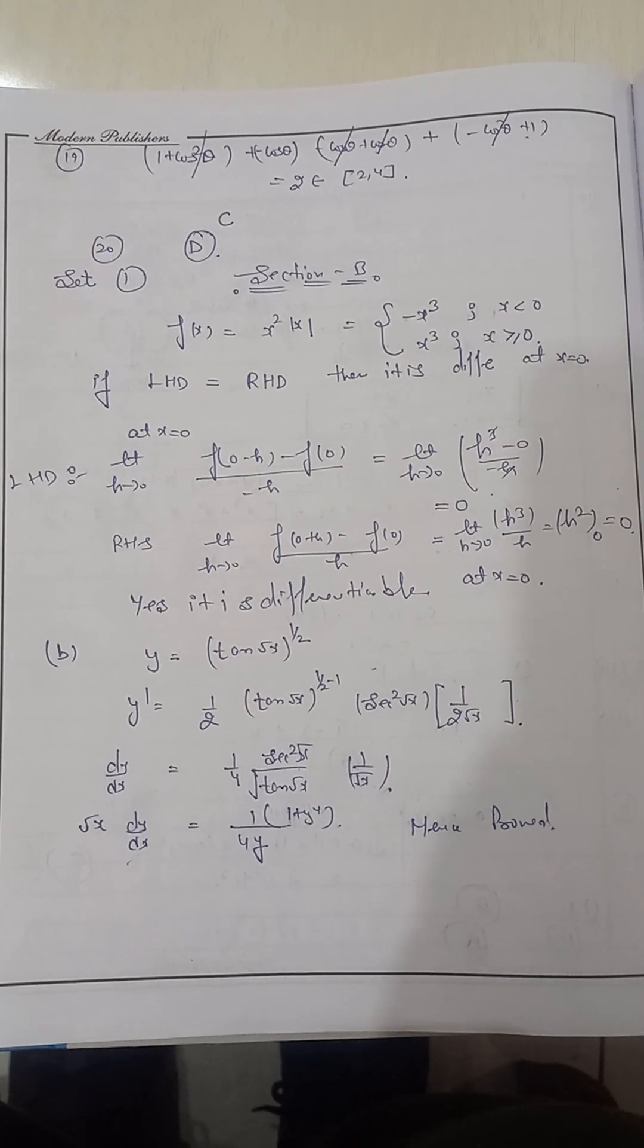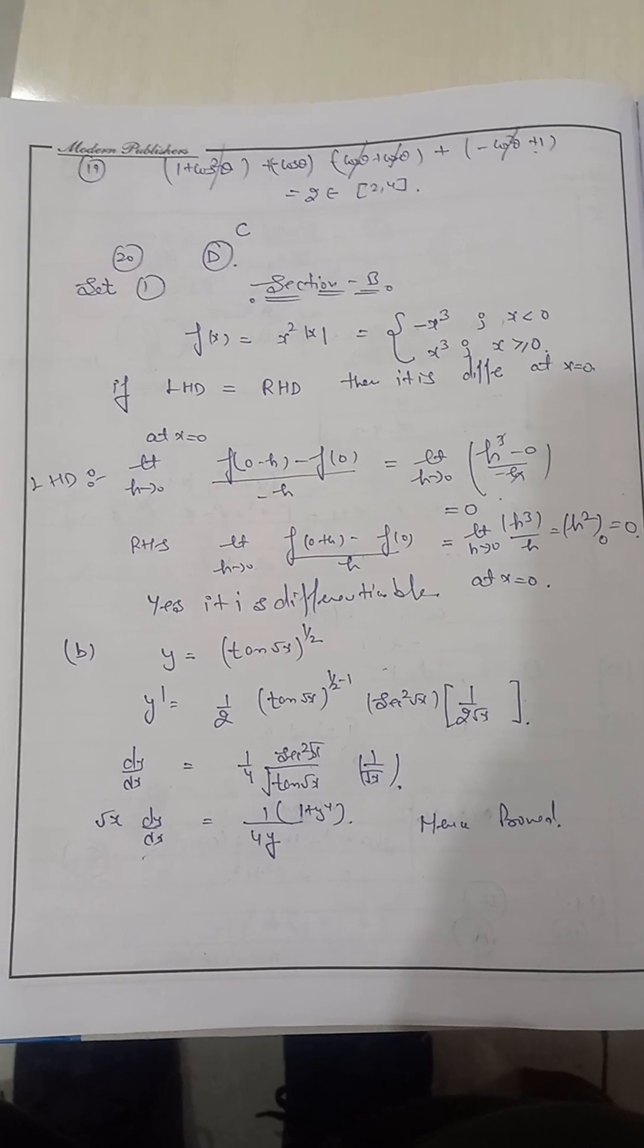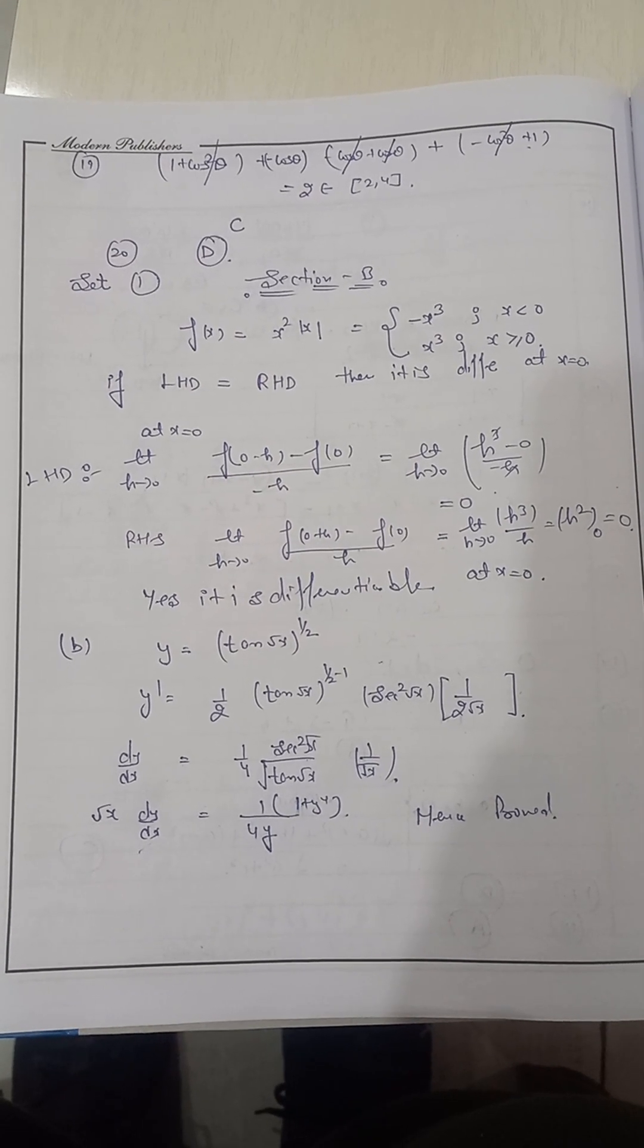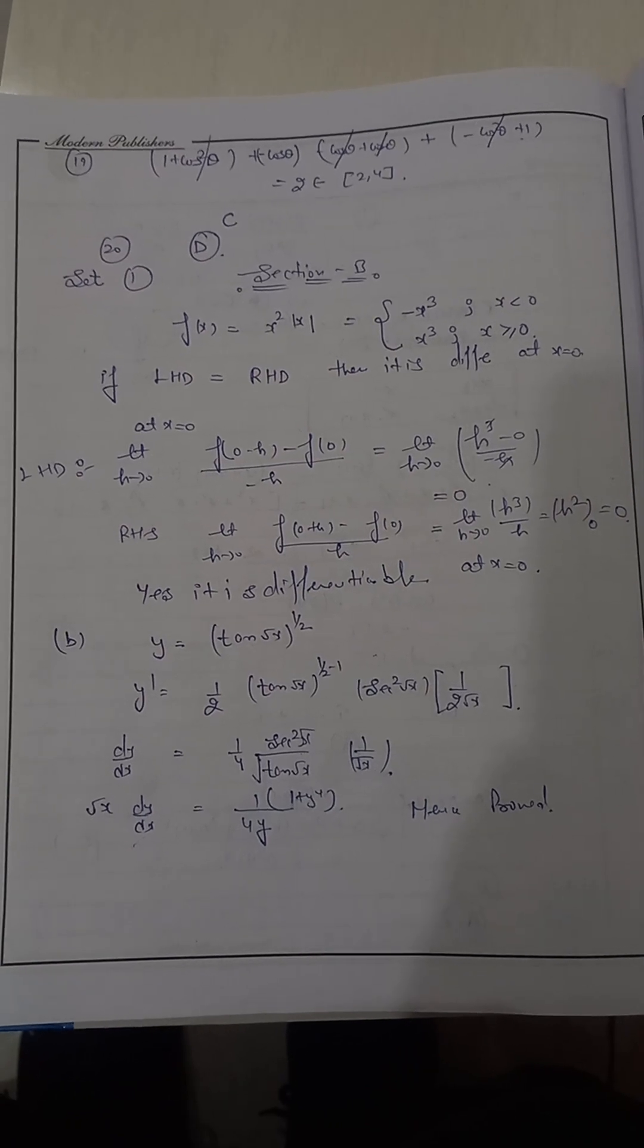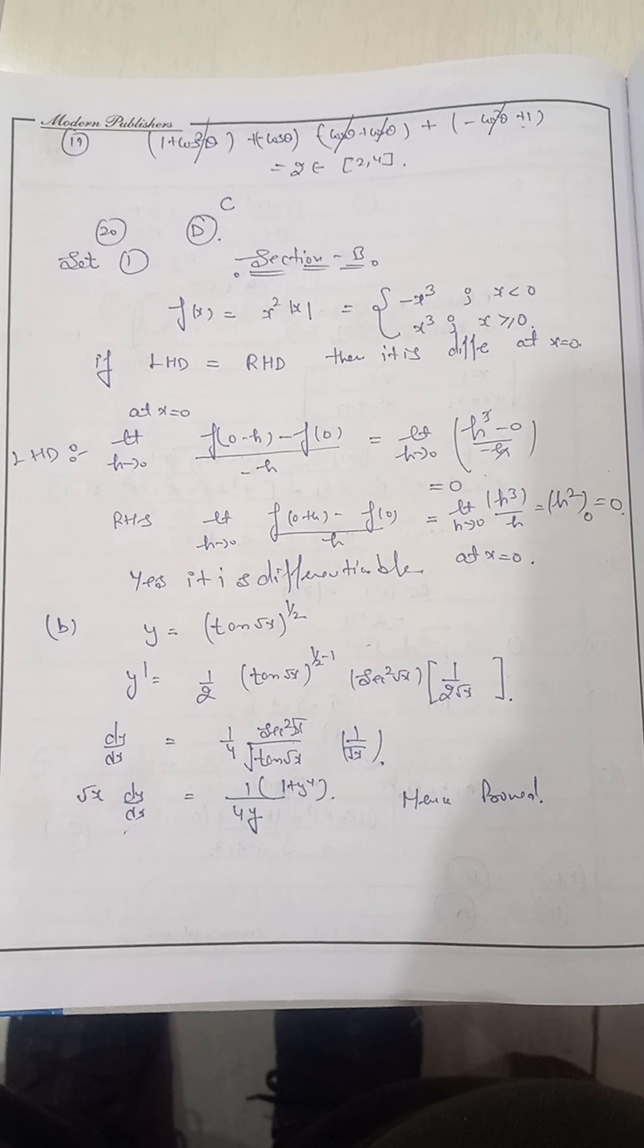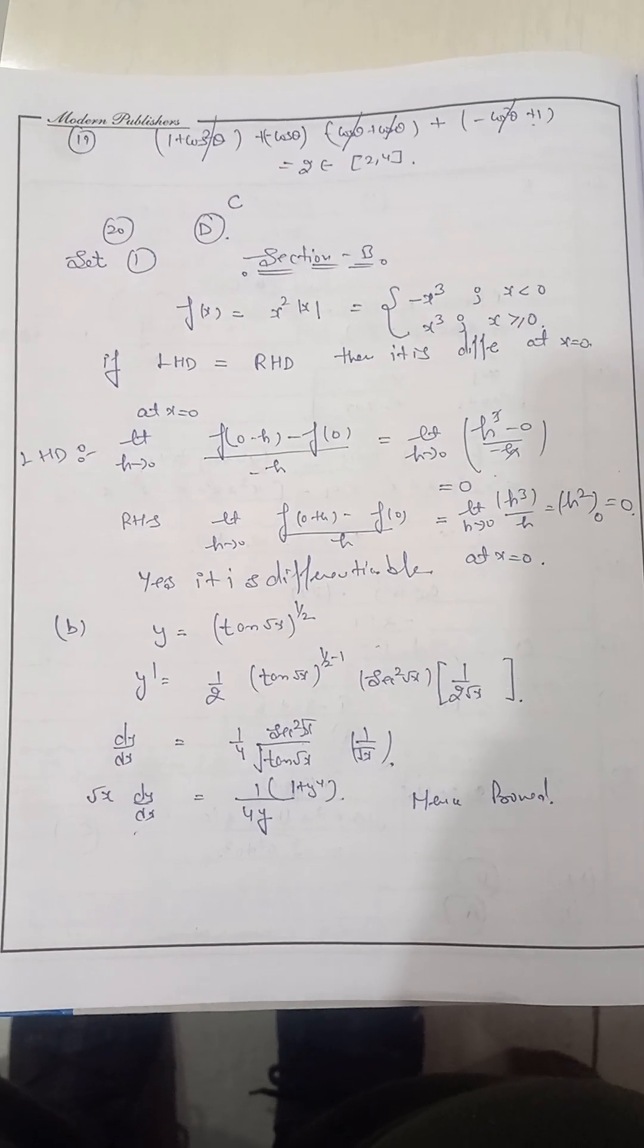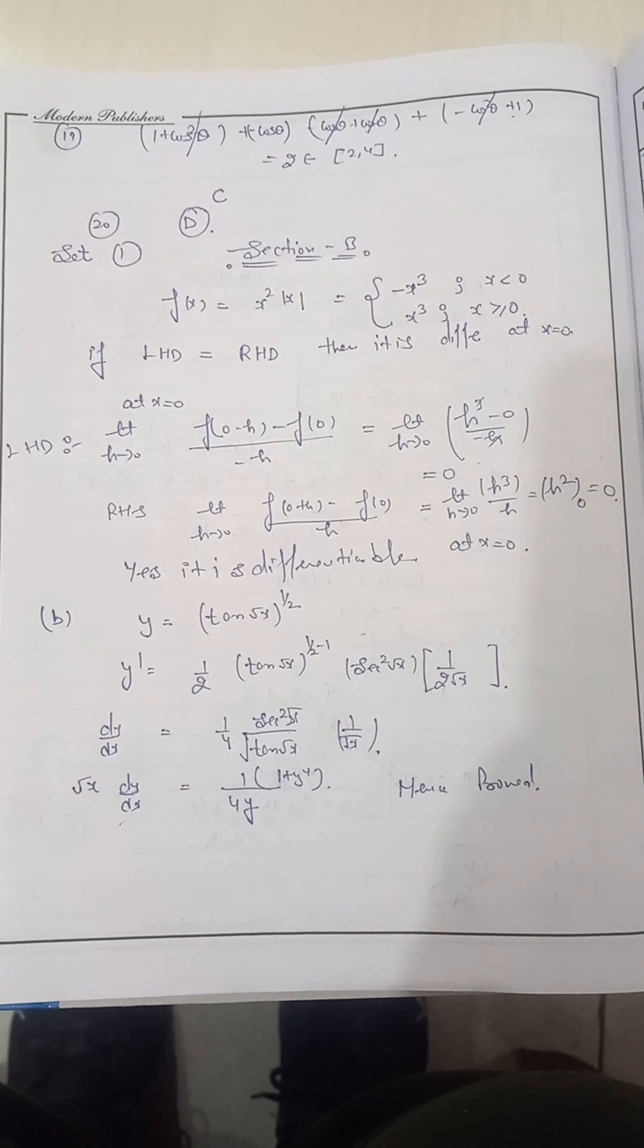On this page you may see assertion reasoning 19th question as well as 20th question. In question number 19, in one question assertion is correct, in the another question reason is correct. So according to your answer or according to your paper you may see that 19th question is having the C option and 20th is D. Now let us move on section B.